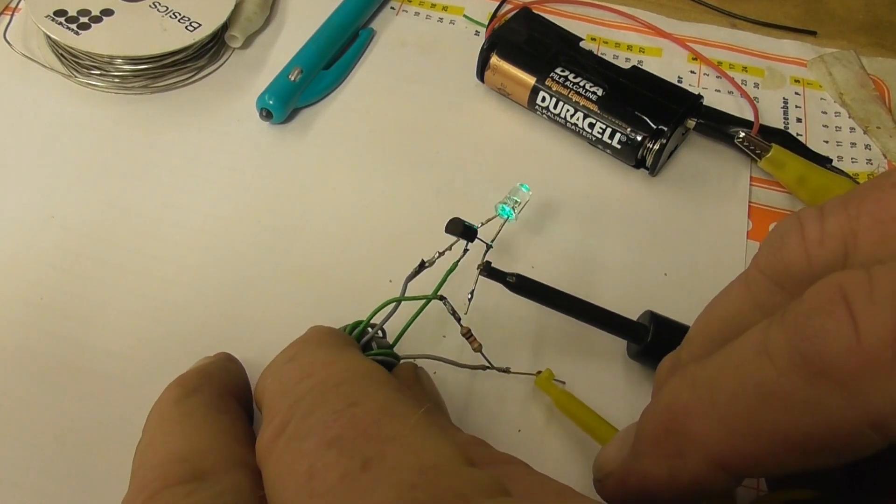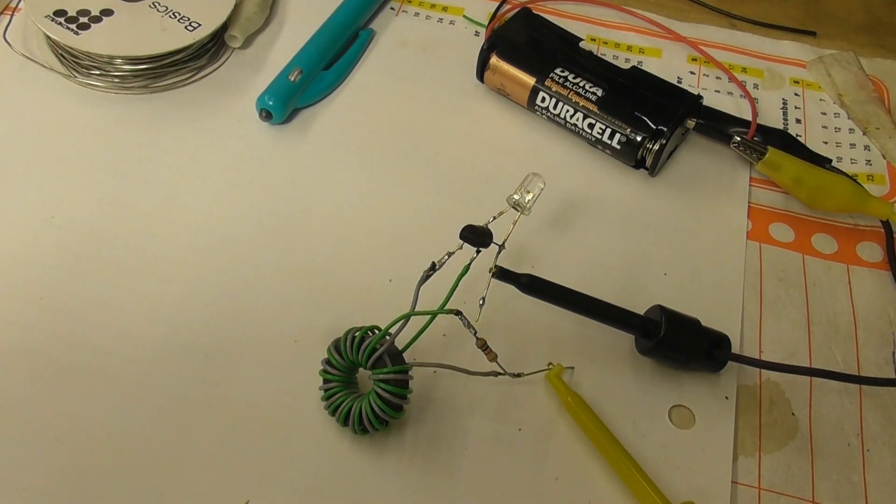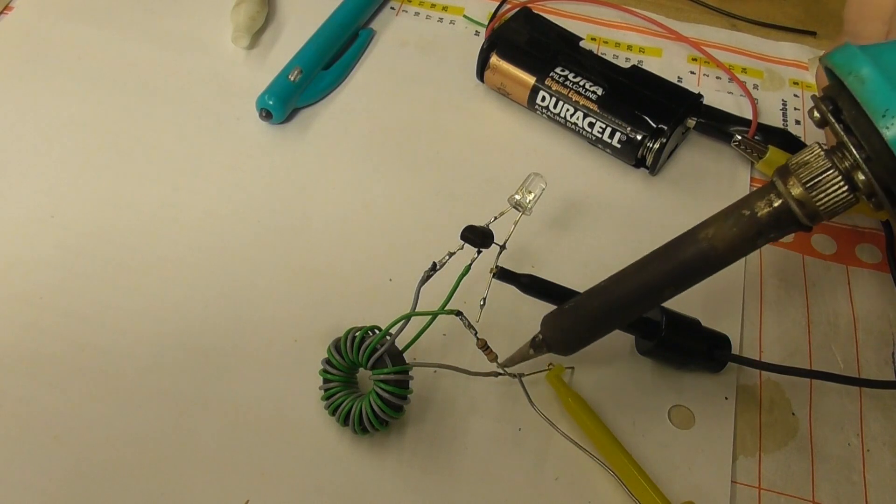Hit soldering. I need to solder that a bit better, a little dab of solder on there and that should hopefully work. These telephone wires are quite hard to solder sometimes; it's got that coating on the outside.